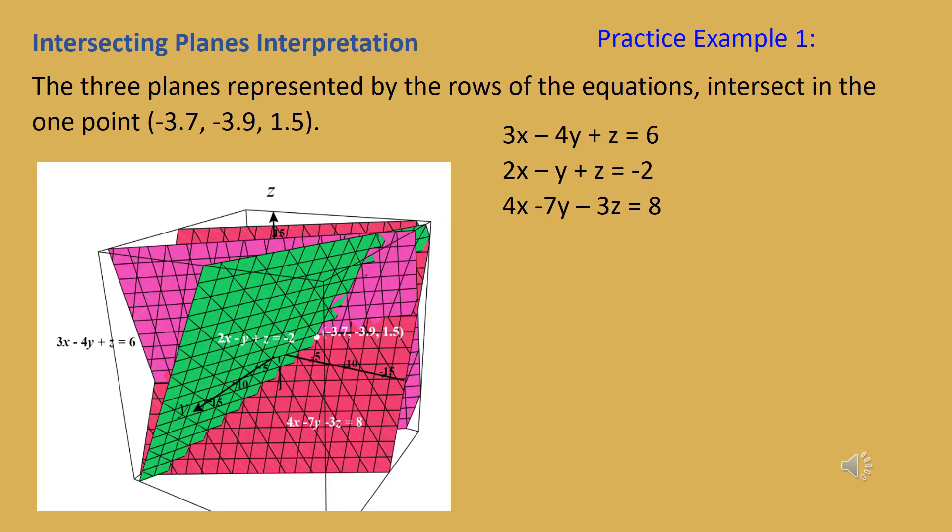The three planes in this case intersect all together at only one point — there's only one point where all three of them agree. The green and pink plane intersect in a line, the reddish and pink plane intersect in a line, and the green and reddish plane intersect in a line. But all three only intersect at that one point where x is negative 3.7, y is negative 3.9, and z is 1.5.